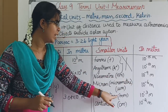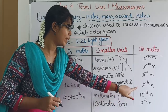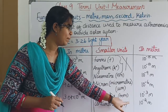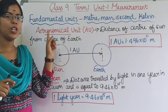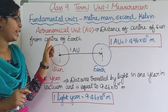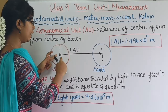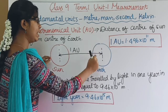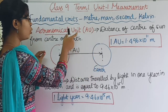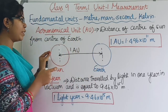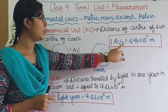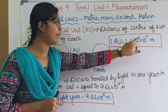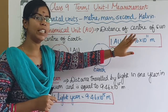Millimeter, symbol mm: 10 power minus 3 meters. Centimeter, symbol cm: 10 power minus 2 meters. Astronomical Unit is the distance from the Sun to the Earth's center. That distance is equal to 1.496 × 10 power 11 meters.